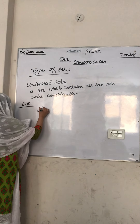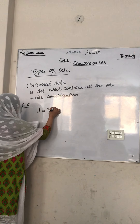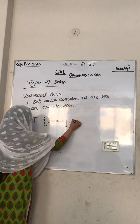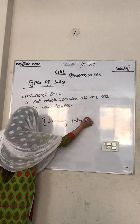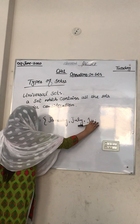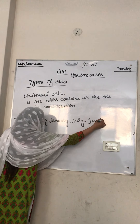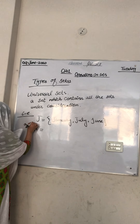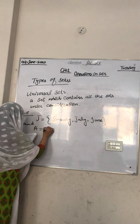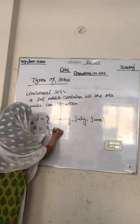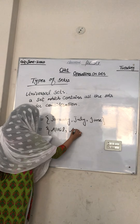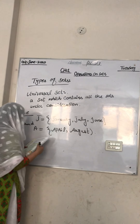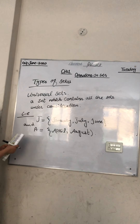For example, J = {January, July, June} and A = {April, August}. These are sets under consideration.